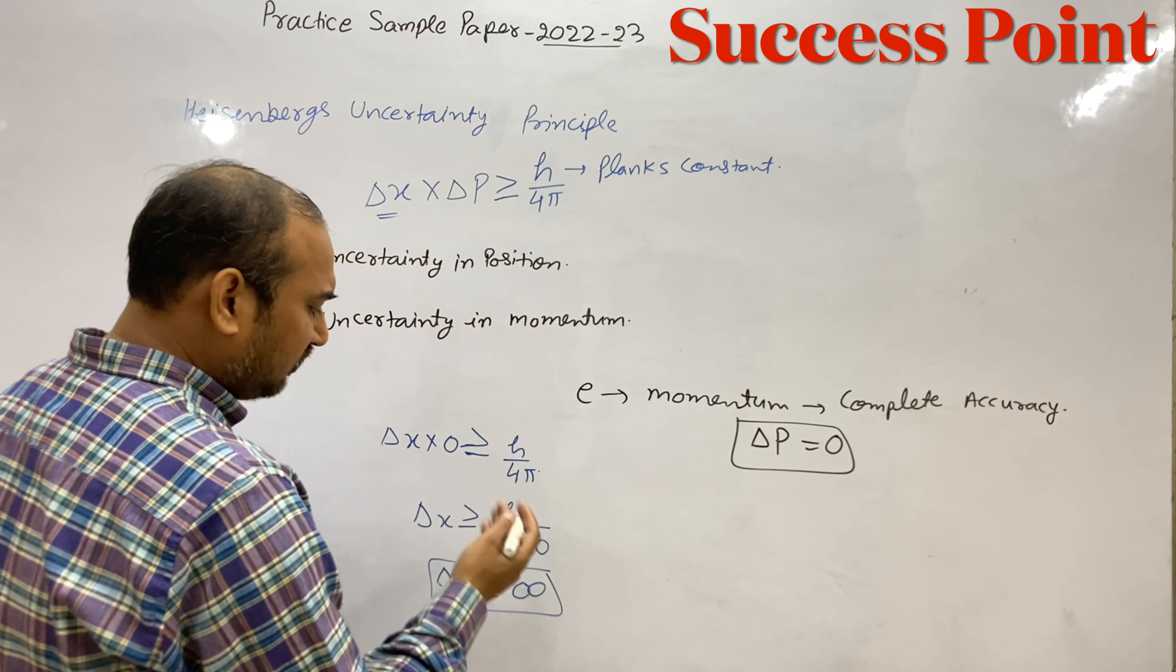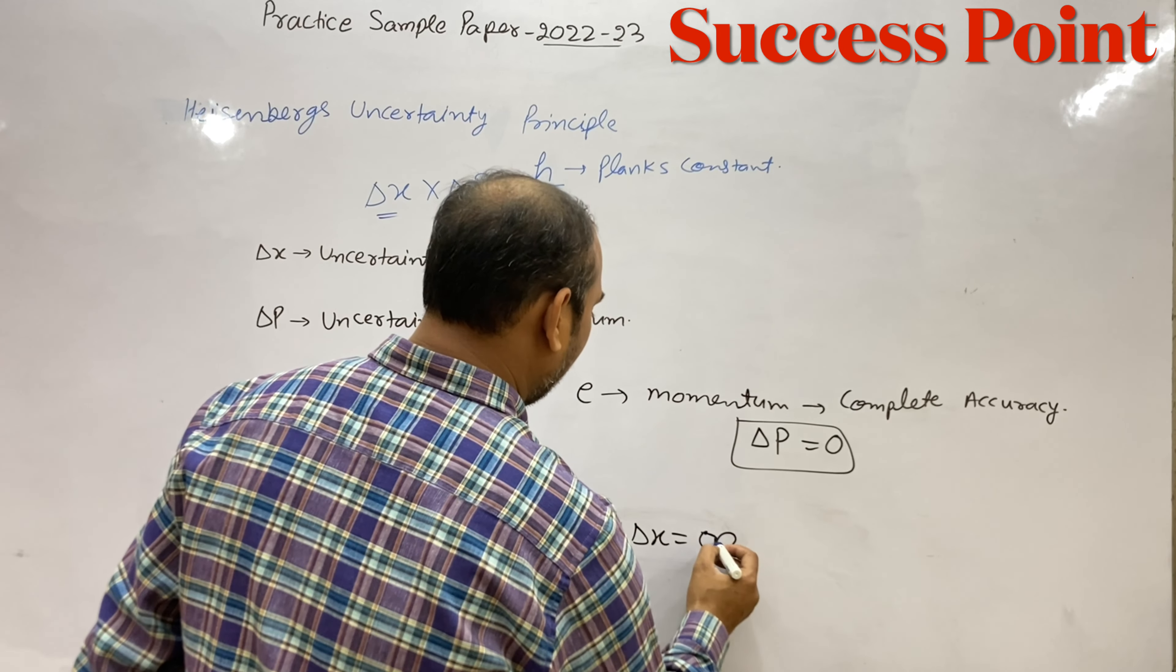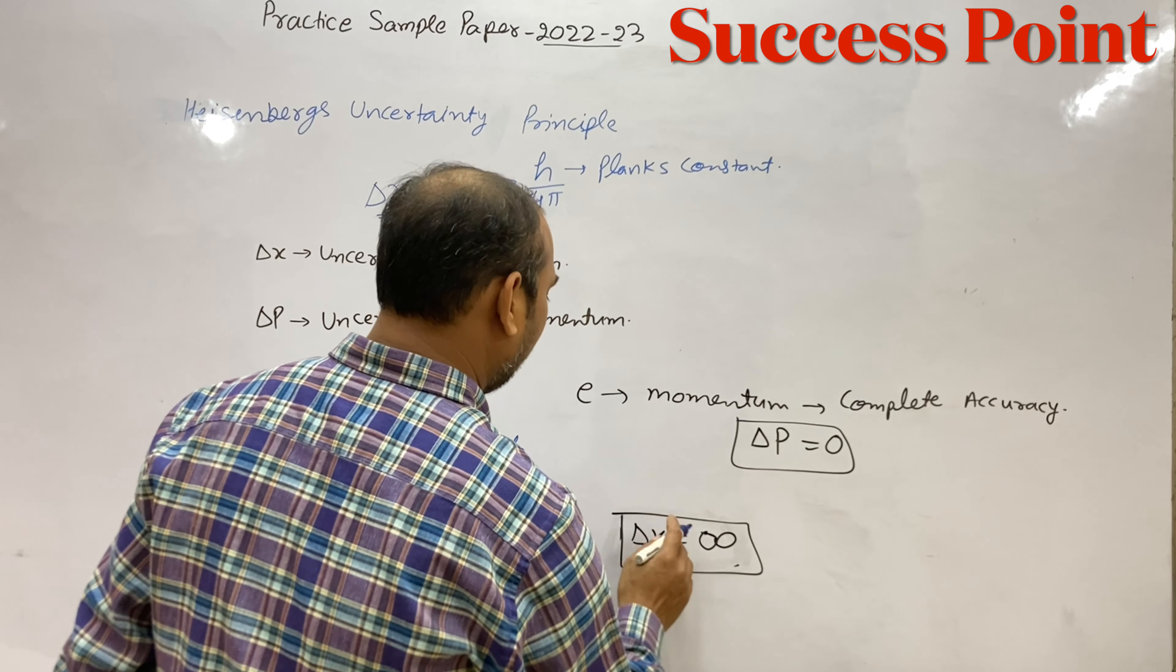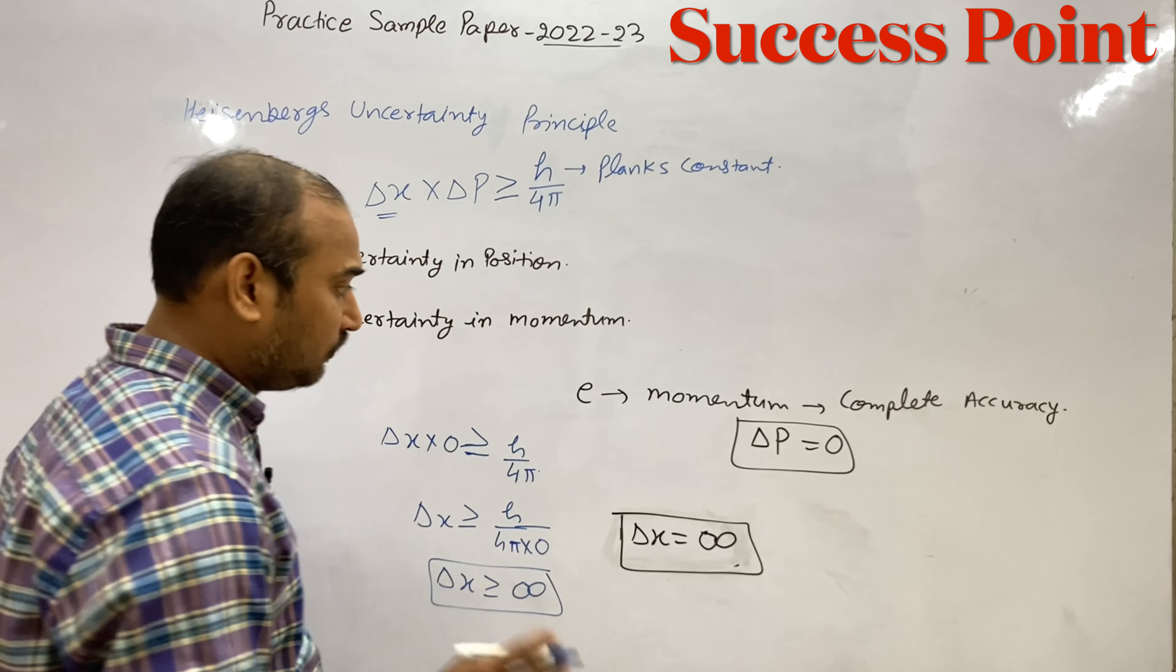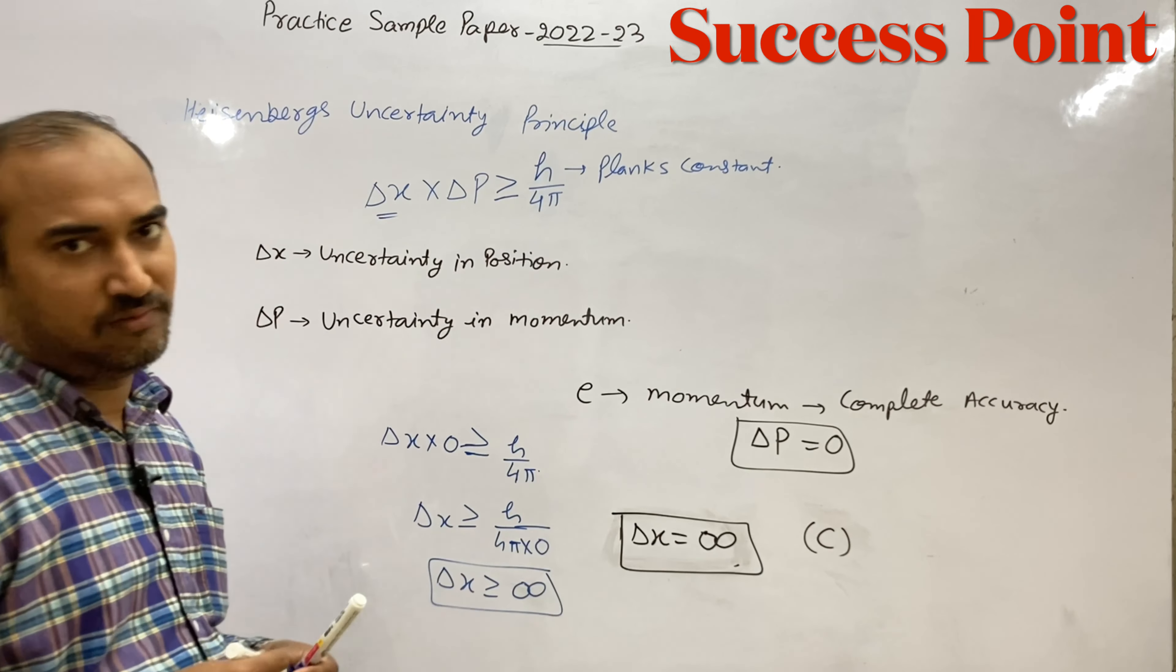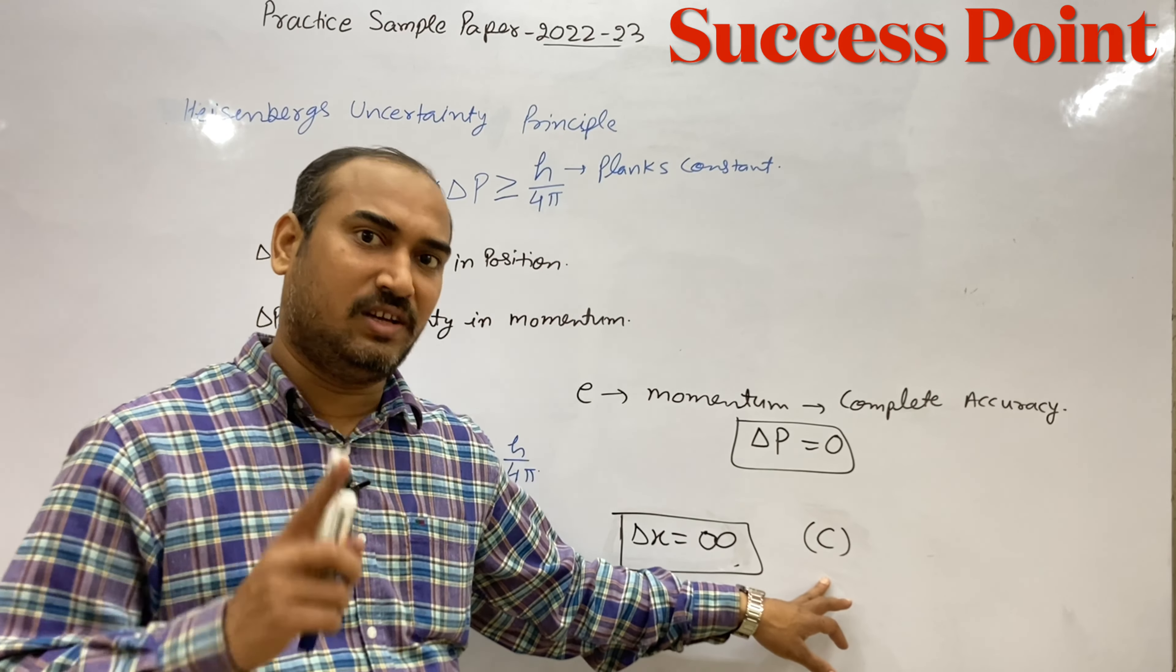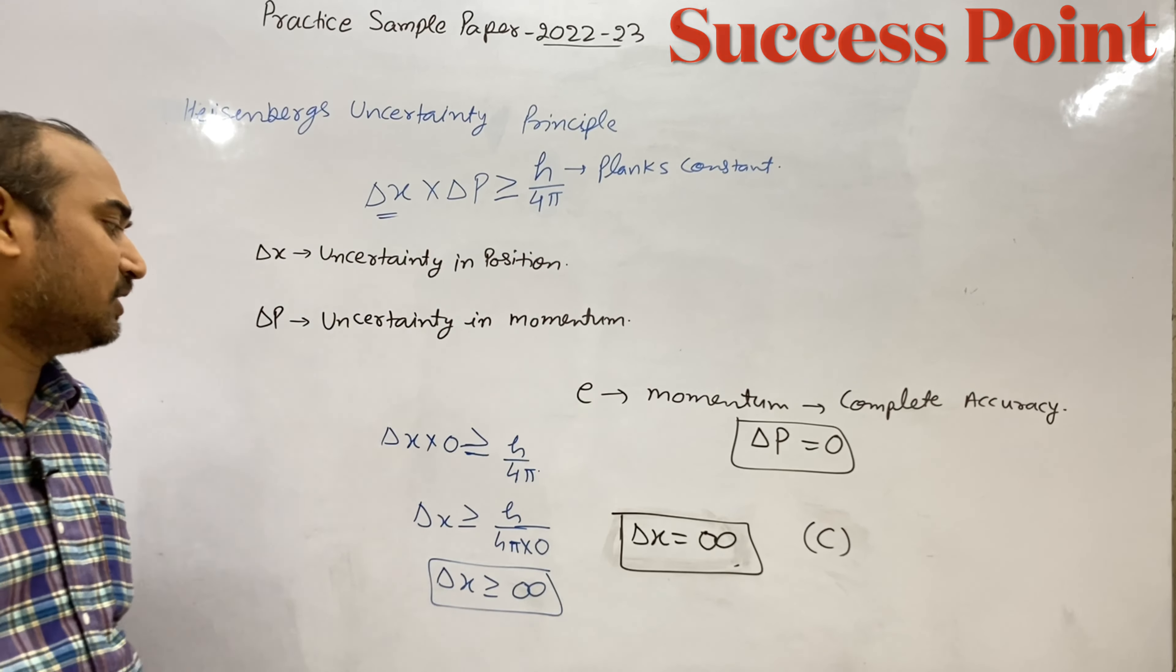This means delta x will become infinity. So option C will be correct - the uncertainty in position will be very large and equal to infinity.